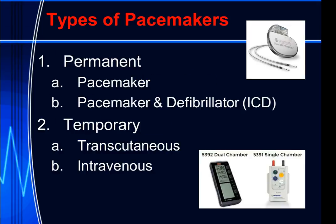Types of pacemakers include permanent and temporary. A permanent pacemaker can have one or two wires, or you can have a combination pacemaker and defibrillator, called an ICD — implantable cardioverter defibrillator. If you look in the corner of your screen, you can see an implanted pacemaker about the size of a silver dollar. This particular picture shows two leads, making it a two-lead pacemaker.